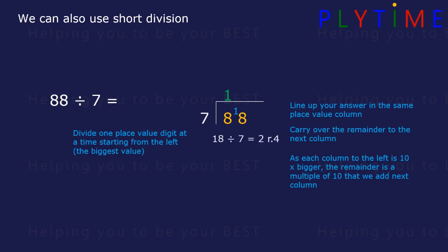18 divided by 7 is 2. Two sevens are 14, and we have a remainder of 4. If we get to the last column and there's a remainder, we can write it as part of the answer. R4, or remainder 4.